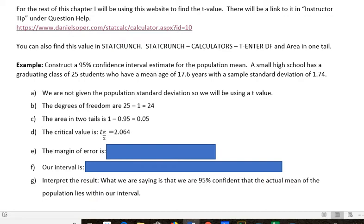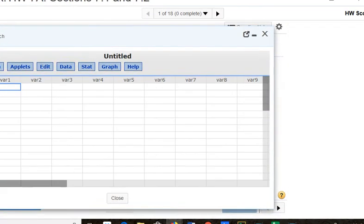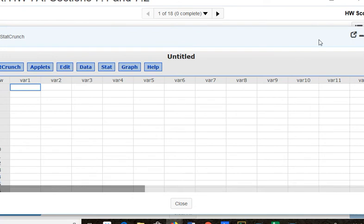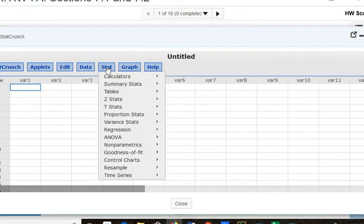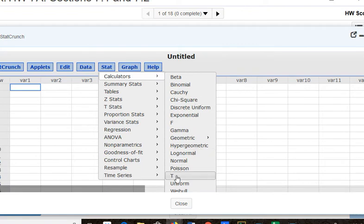When I do this, if I don't make StatCrunch full size, I'm going to go to Stat, and then Calculators, and then T. Sometimes if I don't make it full size, I can't actually see T. So just increase that to full screen if you're having that trouble.